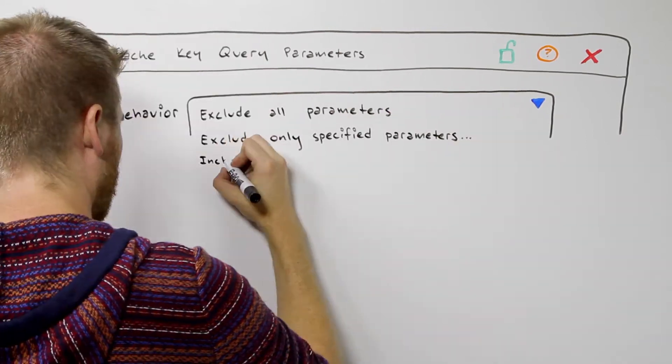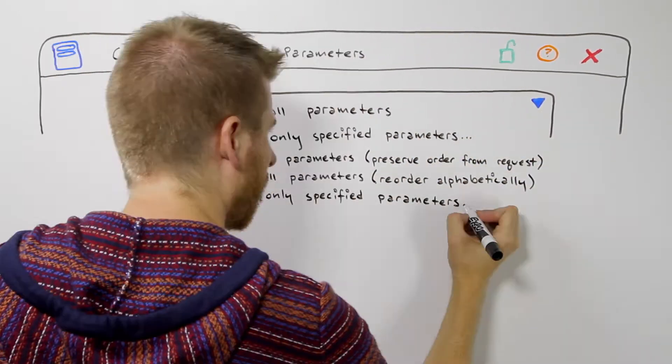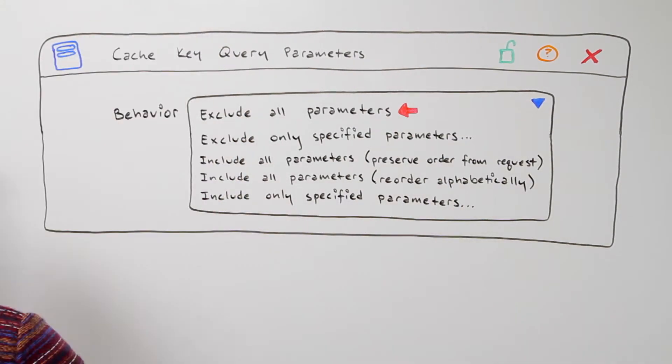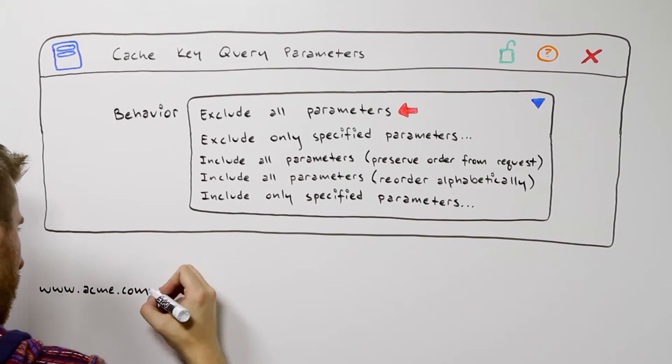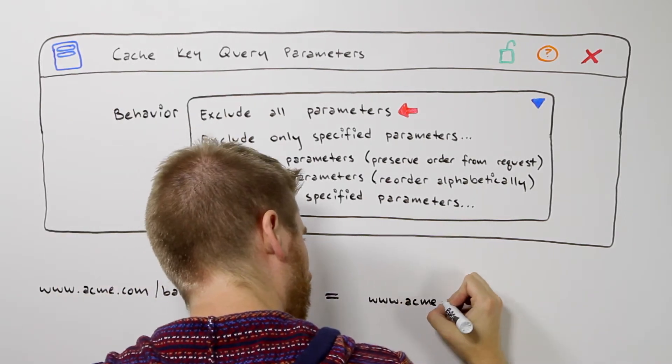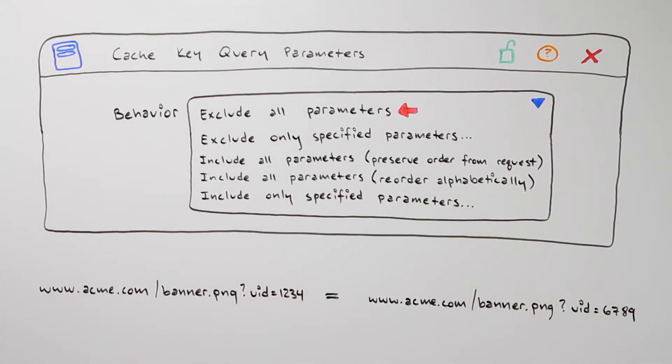If your URLs use query parameters, you have the option to include or exclude them in your cache key. If the query parameter doesn't actually indicate that the contents of the file need to be different, for example, they're merely passing in user or device data, then you'd want to exclude them from the cache key. Akamai will cache a single copy of this file and serve it out regardless of what the query parameters indicate.